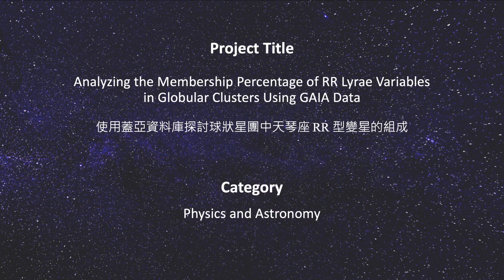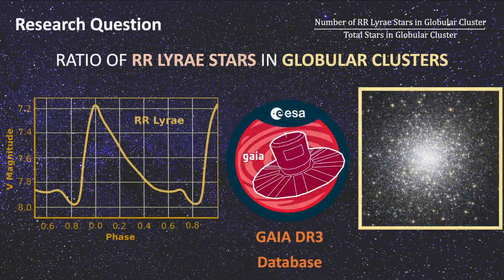Hello everyone, today I'm going to talk about my research in astronomy. My goal is to find the ratio of a special kind of variable star called RR Lyrae variables in globular clusters with the help of the Gaia database.